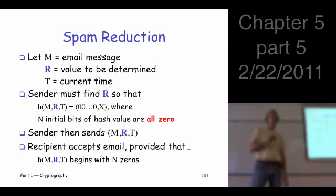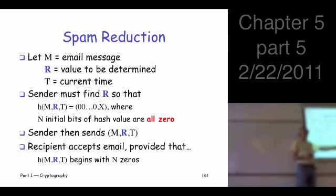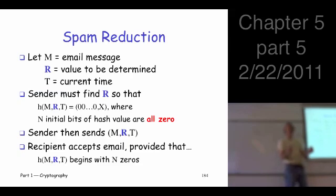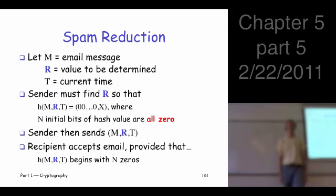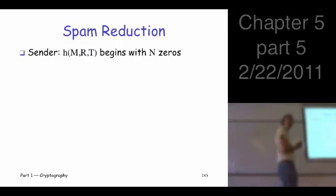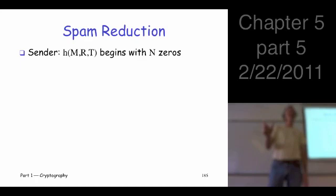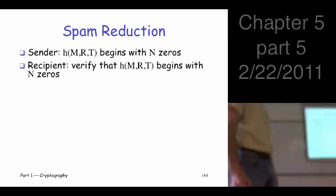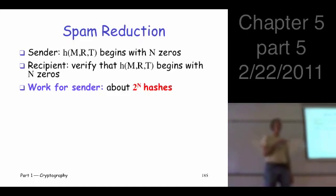The recipient, before accepting an email, takes the values m, r, and t, hashes them, and checks that the result starts with n consecutive zeros. If it doesn't, the person didn't do the required work and the email is rejected. The sender must compute about 2^n hashes; the recipient only computes one hash regardless of n. We can choose n so that it's too much work for a spammer to send massive volumes of email, but computing a million hashes is not very intensive for an ordinary user sending a few emails.